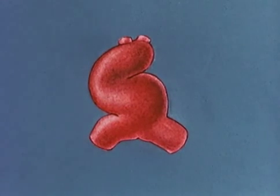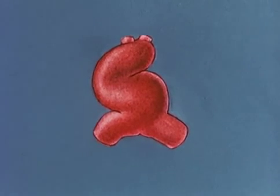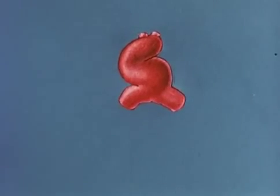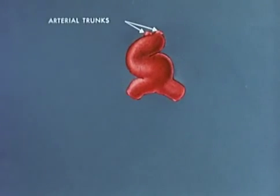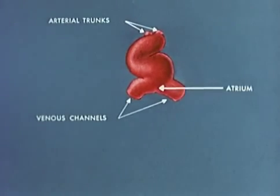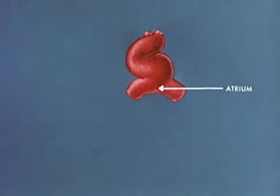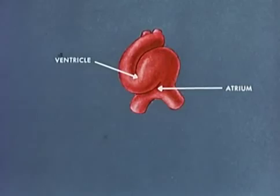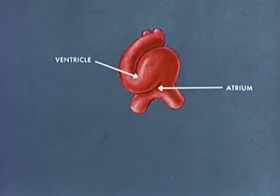Initially, the heart consists of a simple tube. It's anchored at one end by the differentiating arterial trunks and at the other by extensive venous channels which drain into the atrium. Being fixed at both ends, the cardiac tube grows rapidly in length and the embryonic ventricle is bent into a loop to the right of the midline.